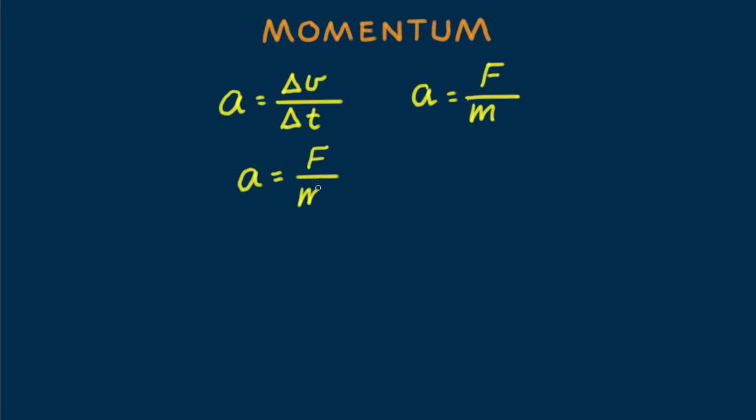Let's equate the two acceleration equations. Multiplying both sides by m delta t, we get f delta t equals m delta v. Or we can say f delta t equals delta m v, which happens to be an intriguing relationship.